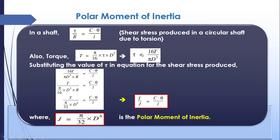The term pi/32 · d⁴ is J, the polar moment of inertia. For a circle, the moment of inertia about the XX and YY axes is pi/64 · d⁴, but about the ZZ axis (perpendicular to the plane) it is pi/32 · d⁴ — that is the polar moment of inertia J. So the full torsional equation is T/J = C·theta / L.